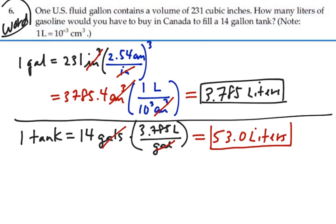So if we're in Canada and we're buying gasoline by the liter to fill our tank, we need to buy 53 liters to fill our 14-gallon tank. That's our answer.